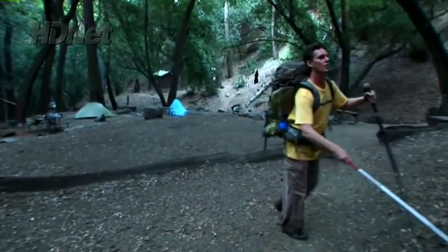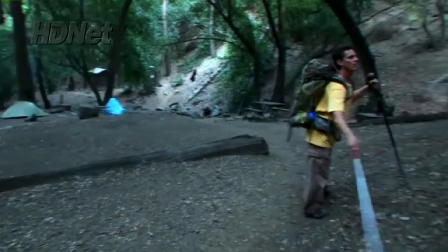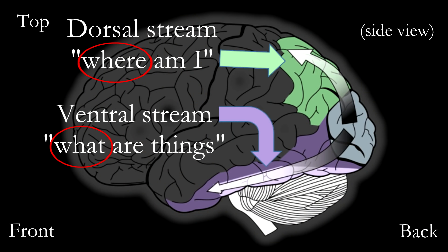Daniel Kish, an echolocator that has been blind from birth, says it like this: You're essentially asking the environment, what are you and where are you, and you're receiving those answers. So you're getting an image in your mind? Yes, I definitely get three-dimensional images with depth and character and richness. And I can process those, and I can interact with those.